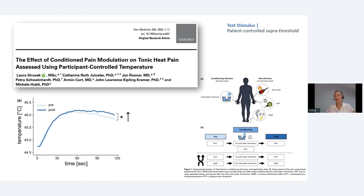This approach has been used by Sieracek and colleagues at the Balgrist lab in Switzerland. They used the tracking method as one of several CPM test stimuli, including pressure pain threshold and nociceptive withdrawal reflex, with cold water bath as the conditioning stimulus. The graph shows that the pre-conditioning temperature was lower versus the post-conditioning temperature — it increased — demonstrating a nice way of looking at CPM testing.